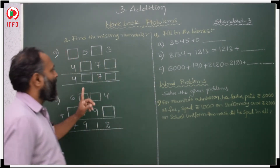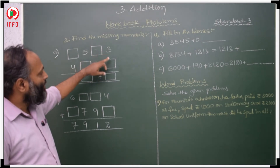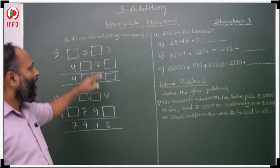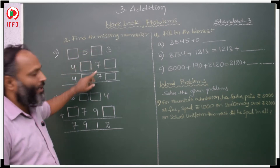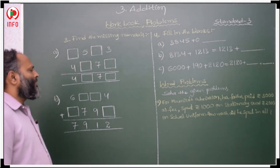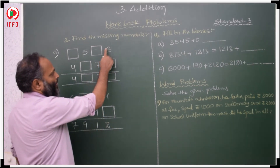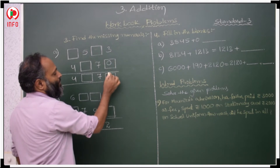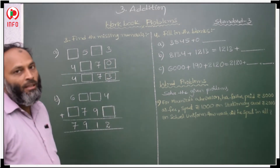First we have to check what is here. So here 3, and after that we have to check here also. So here 3 — if I take 0, then 3 plus 0 is 3, 3 plus 0 is 3.